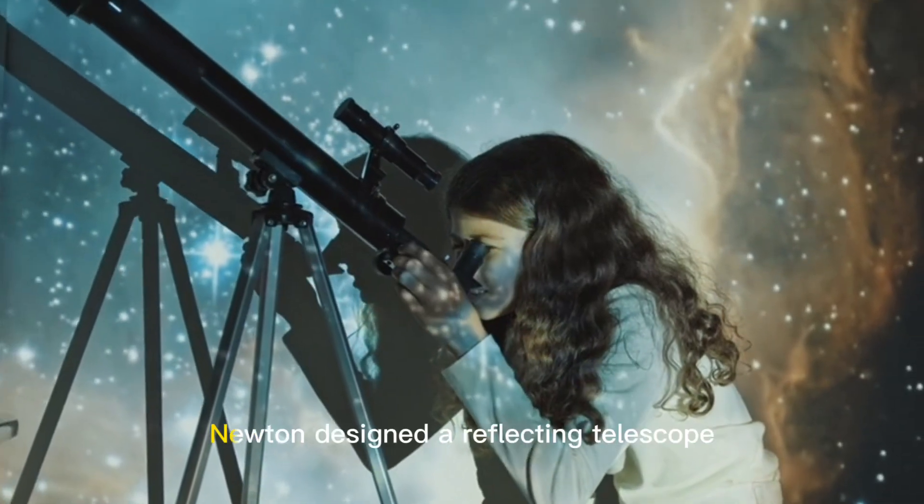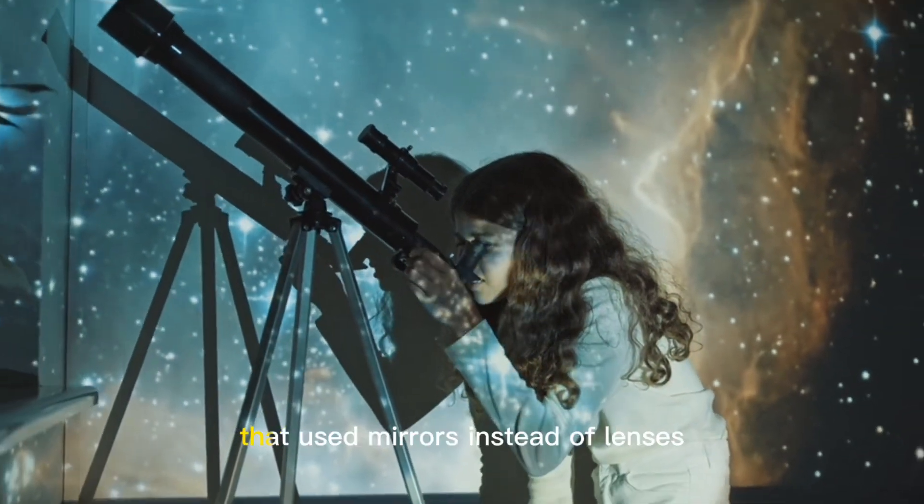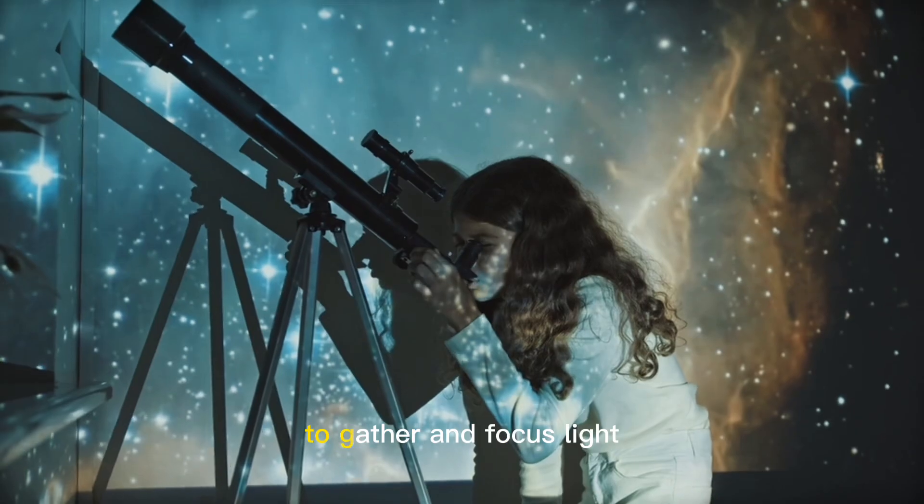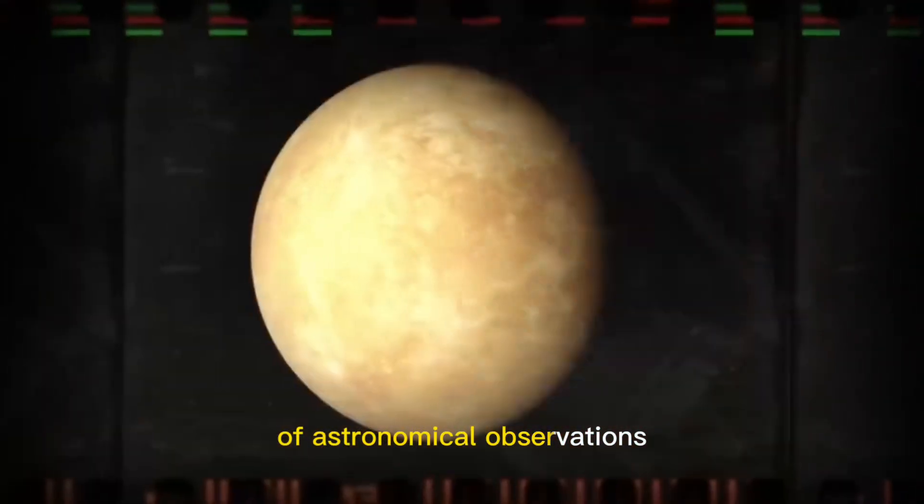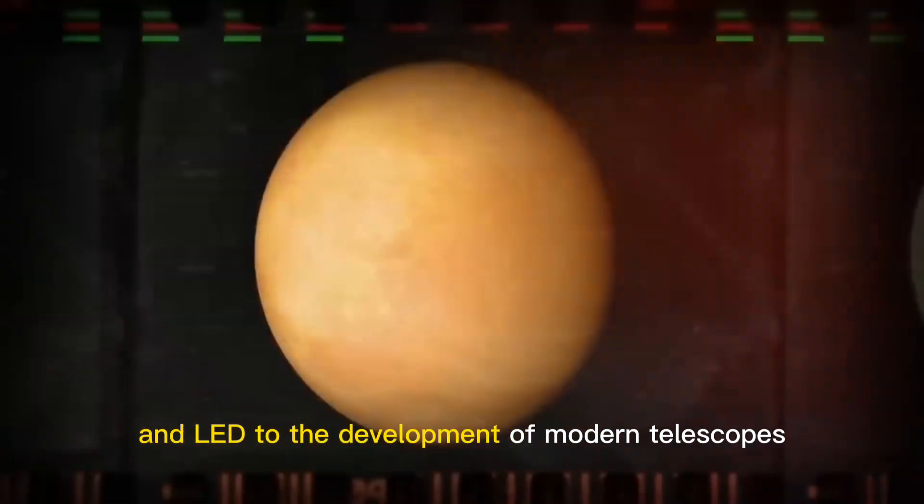Reflecting Telescope. Newton designed a reflecting telescope that used mirrors instead of lenses to gather and focus light. This design greatly improved the quality of astronomical observations and led to the development of modern telescopes.